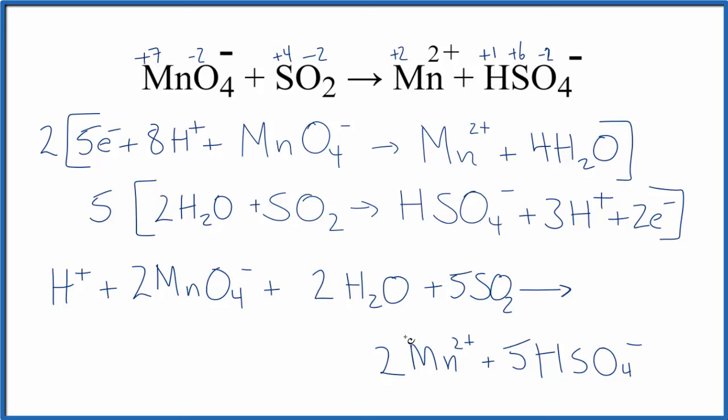Charge is conserved. If you count the atoms up, they're balanced as well. So you know you're correct when you get to this point. You have the same charge, same number of atoms on each side. You've done it correctly. If not, you need to go back and check your work.